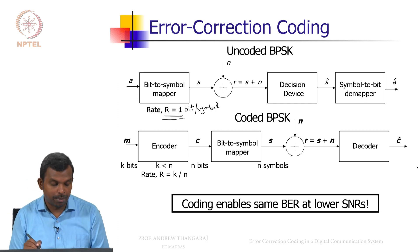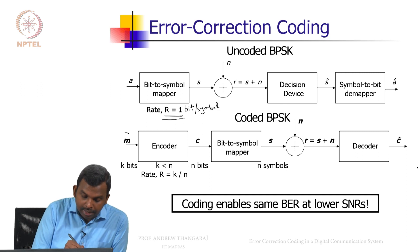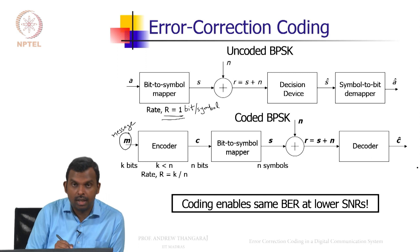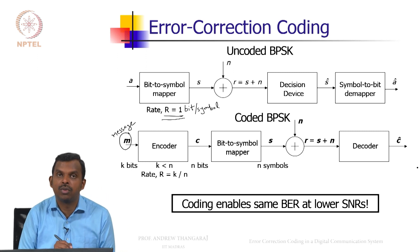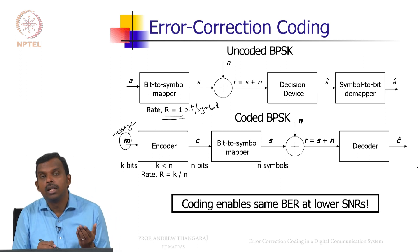What happens in coded BPSK? You do not transmit 1 bit at a time, you collect k bits into a message M. This terminology of message we will use again and again. Now this k can be greater than 1, it usually is and it can be quite high also.